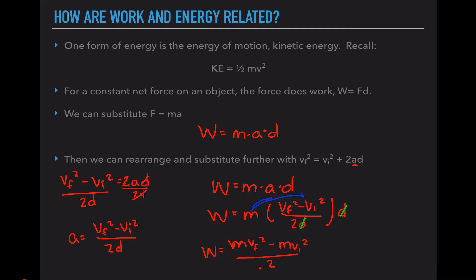So I have work equals mvf² minus mvi² all over 2. Now I'm going to pull this divided by 2 out and just make it 1/2. So work equals 1/2 mvf² minus 1/2 mvi². We substituted mass times acceleration for force, rearranged this kinematics equation to solve for acceleration and substituted that in, and then distributed out the different mathematic symbols.